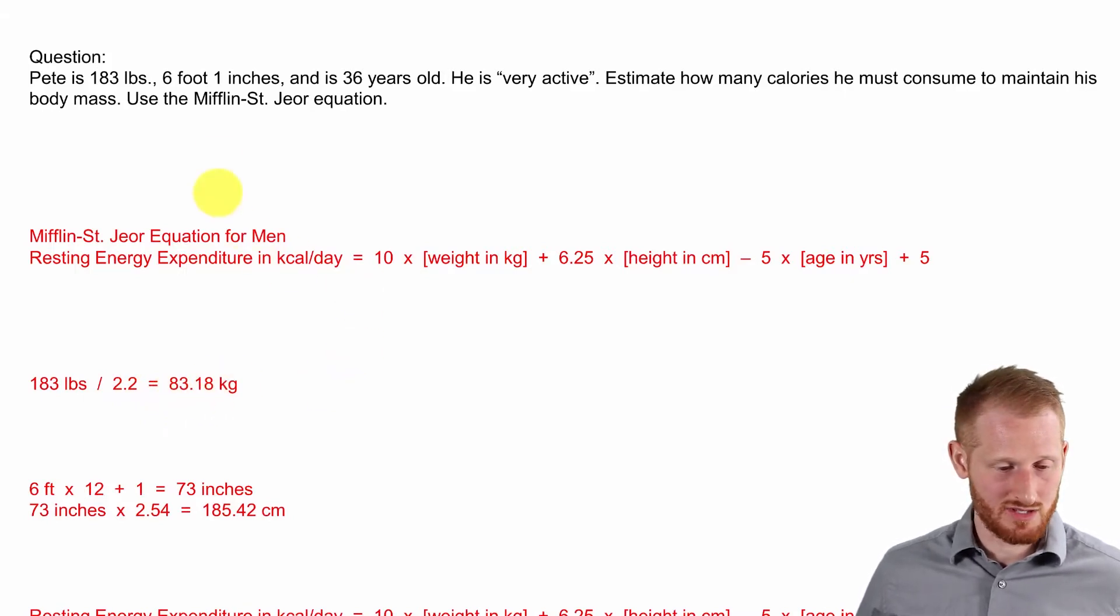We also need to convert his height of 6'1 into centimeters. So 6 feet times 12 inches per foot plus the one inch gives us 73 inches tall. 73 inches times 2.54 as the conversion factor to centimeters gives us 185.42 centimeters tall.